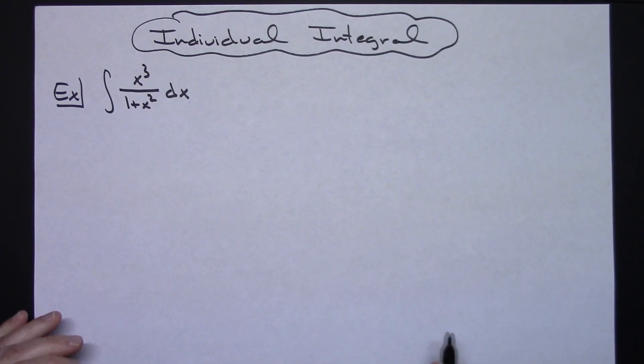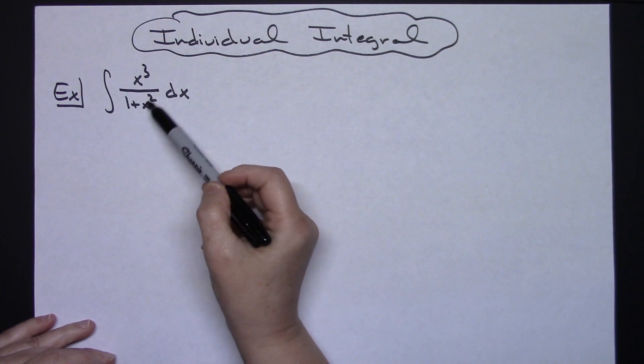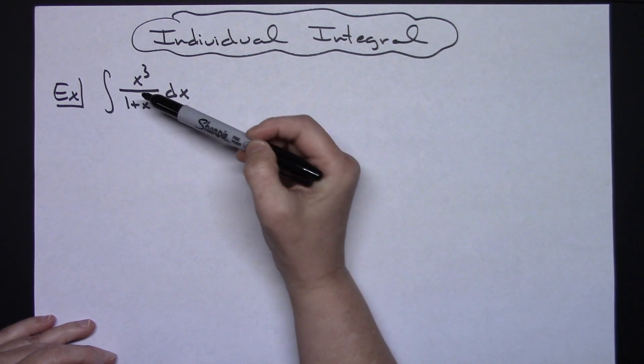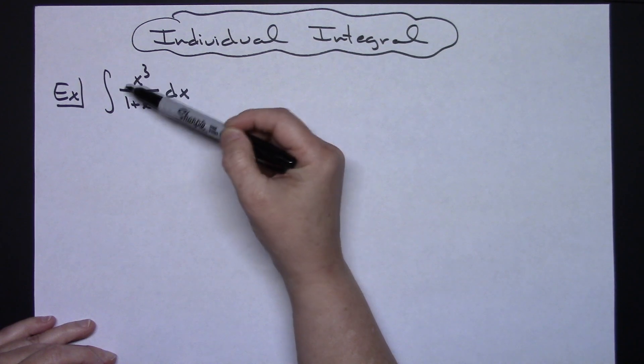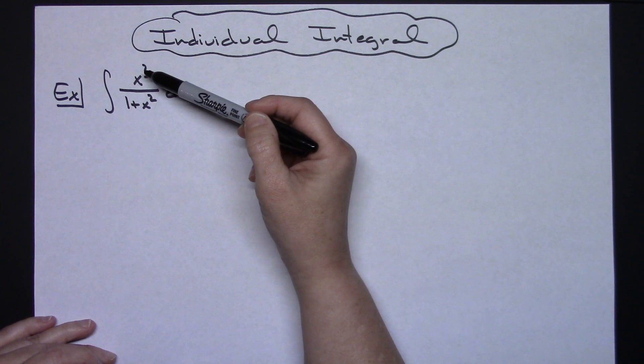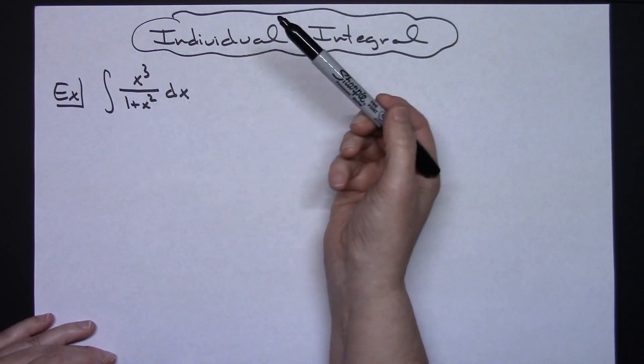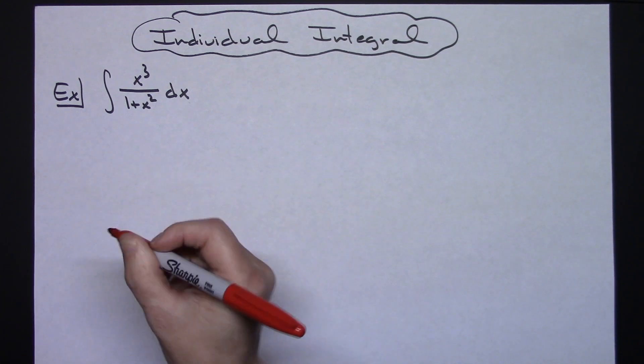In this video I'm going to be working on an individual integral. We're going to take a look at the integral of x to the third over 1 plus x squared dx. Now with this being a rational expression, the easiest thing to do is to do some long division on this, and hopefully that will turn this into an expression that will be a lot easier to integrate. So that's the first thing that we're going to do.